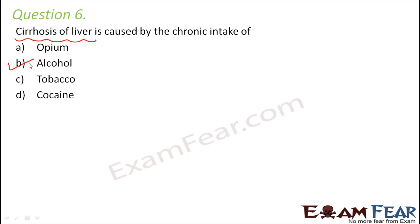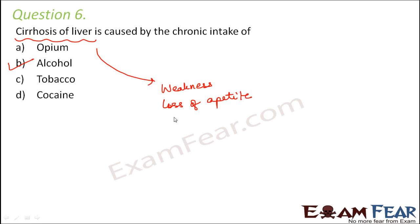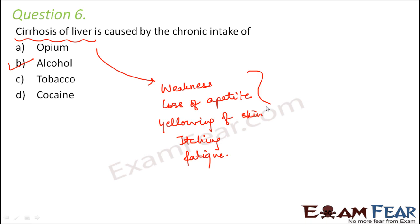Other causes include viral hepatitis B and C, which also result in cirrhosis of the liver. But out of these options, alcohol is one of the major reasons. Some symptoms of cirrhosis include weakness, loss of appetite, yellowing of skin, itching, and fatigue — a general feeling of tiredness.